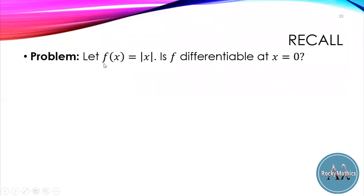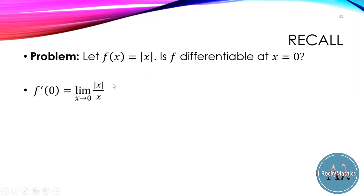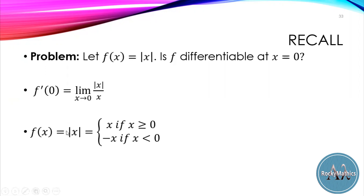In our previous problem, we discussed that the function f(x) equal to the absolute value of x is not differentiable at x equals 0. Along the process of finding the derivative at x equals 0, we obtained the expression equal to the limit of absolute value of x over x as x approaches 0. We determined the function is not differentiable by evaluating the limit from the left and from the right, using the definition that absolute value of x equals x if x is greater than or equal to 0, and negative x if x is less than 0.